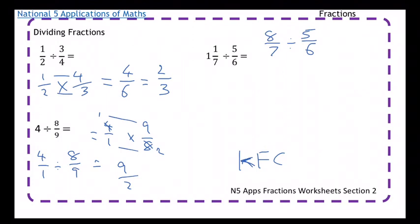So now I keep, flip, change. Keep the first fraction the same. Flip the second fraction upside down and change the divide to a multiply. Now I just multiply along the top, along the bottom. 8 times 6 is 48. 7 times 5 is 35. And that's my final answer.